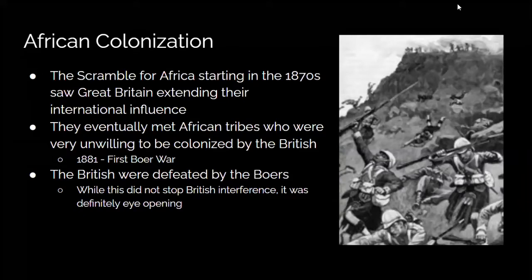One of the major things that happened to all of Europe, and Great Britain specifically, during the half century before World War I was African colonization — specifically called the Scramble for Africa — which started in the 1870s and really saw Great Britain extending their international influence further. However, they eventually met African tribes who were very unwilling to be colonized, due to the bad past that colonization had in Africa.